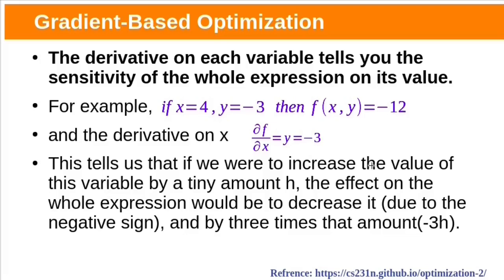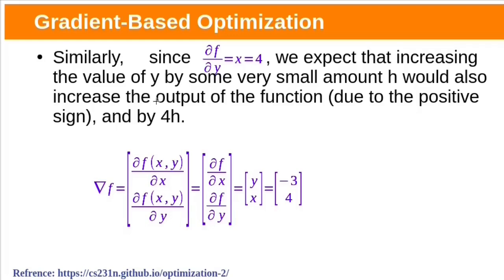The derivative with respect to x is y, so its value is −3. What does this mean? If we increase x by a very small amount h, f will decrease because the derivative has a negative sign. Similarly, the derivative with respect to y is x, with value 4 — meaning if we increase y by a small amount h, f will increase by 4 times h. So the total derivative, or gradient of f, is the vector of partial derivatives with respect to x and y. In this case ∇f = (−3, 4).